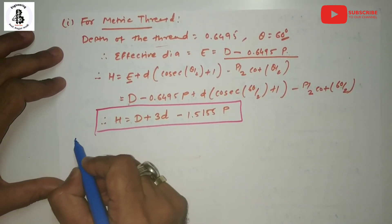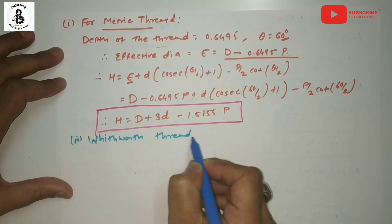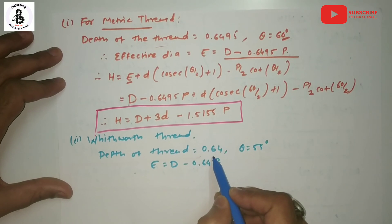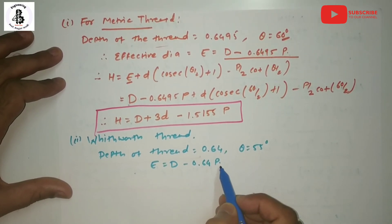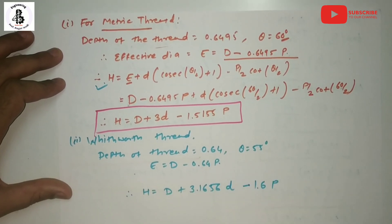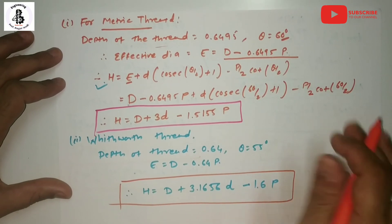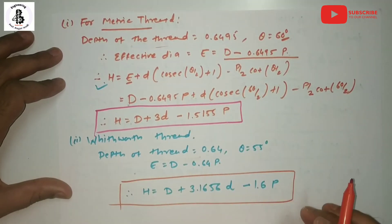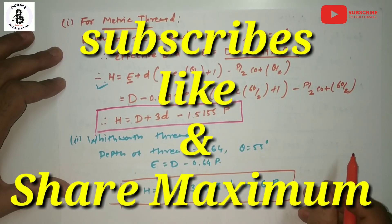For the Whitworth thread: depth of thread = 0.64P, θ = 55°, and effective diameter E = D − 0.64P. Substituting these values into the main equation, we finally get: H = D + 3.1656d − 1.63P. This is the methodology for deriving the equation for effective diameter by the three wire method, applicable for both metric and Whitworth threads. I hope you understand — this is the derivation. If you like this, please subscribe and share more mechanical engineering tutorials.